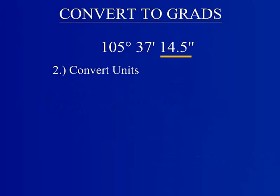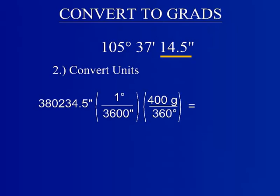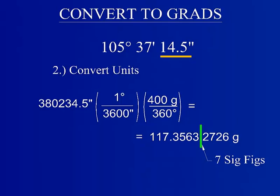Continue with part two of this conversion. If one degree is equal to 60 minutes and one minute equal to 60 seconds, one degree is equal to 3600 seconds. Recall that 400 gradients is equivalent to one full rotation, which is also equal to 360 degrees. Truncate the solution to the appropriate number of significant figures.